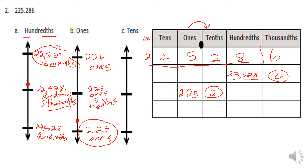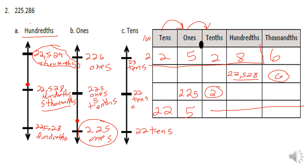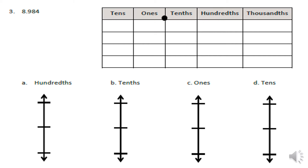The last part of this problem has us rounding to the nearest tens. I can see I have twenty-two tens and five ones. I'm only looking at the place value right next to it to determine rounding. The bottom is twenty-two tens, the top is twenty-three tens, and the center is twenty-two tens and five ones. Our number has twenty-two tens and five ones, which lands right on the center. Since it's five or above, we push it up and round to twenty-three tens.